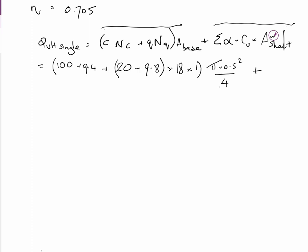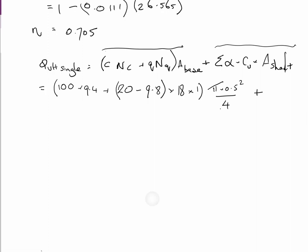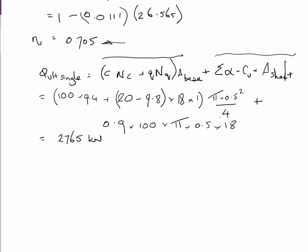Plus the second part of the equation, the shaft adhesion, the sum of - if we have different layers, in this case we've got one layer continuous. Alpha is 0.9, CU is 100, and the area of the shaft is pi times 0.5 times 18 metres deep. And that's going to give us the shaft adhesion, you can go through and calculate all that but that calculates out to 2765 kilonewtons. Alright, so that gives us the ultimate bearing capacity of a single pile.